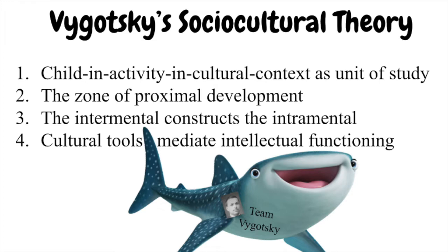Let's take a look at four principles of Vygotsky's theory and use the film Finding Dory to help us relate to and understand the theory. The four principles of Vygotsky's sociocultural theory we will examine are: the child and activity in cultural context as a unit of study, the zone of proximal development, the intermental constructs the intramental, and cultural tools mediate intellectual functioning.